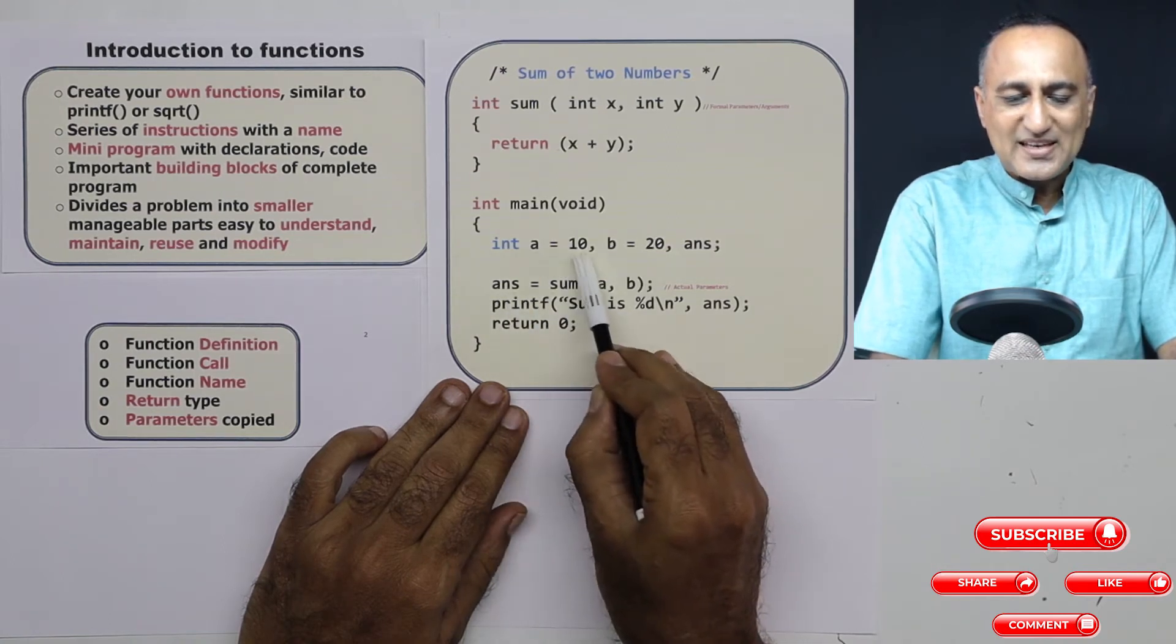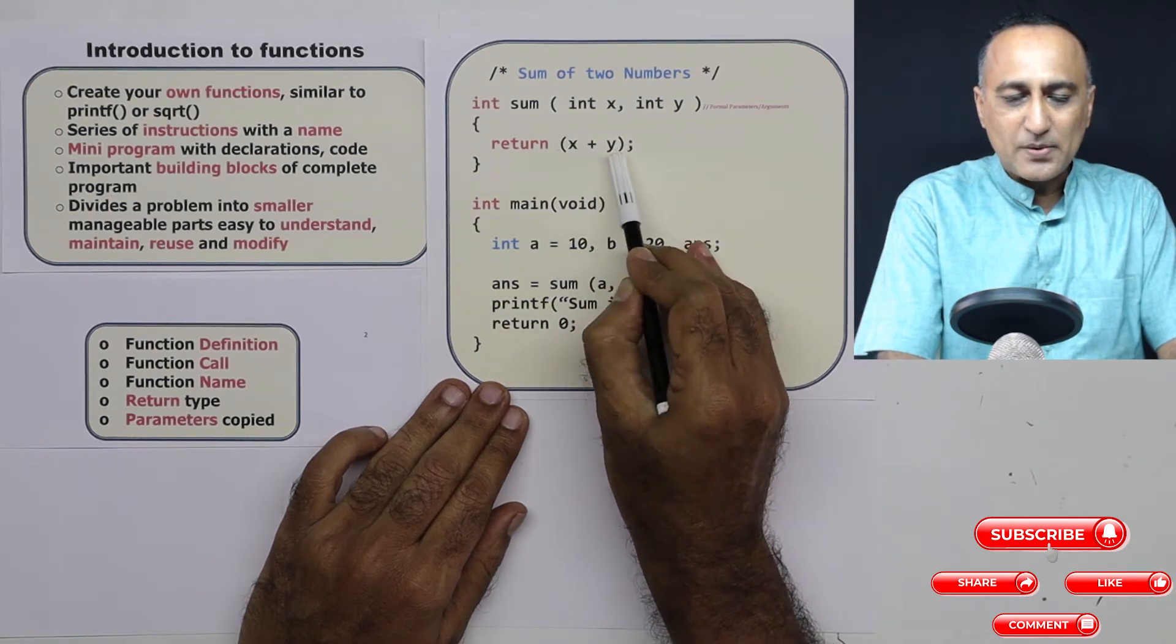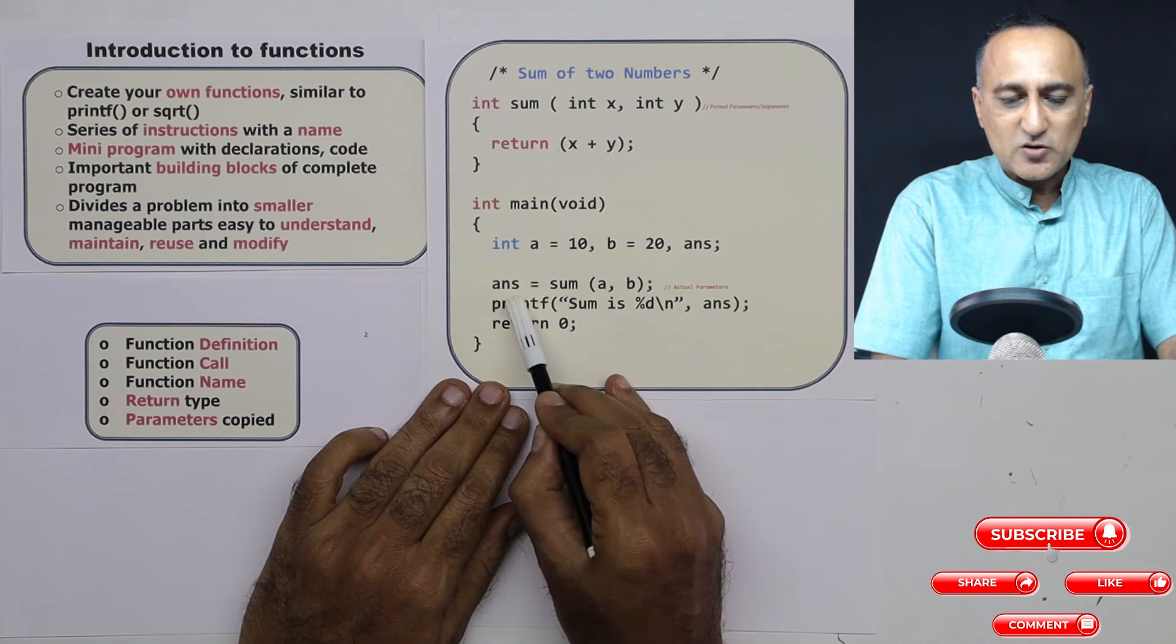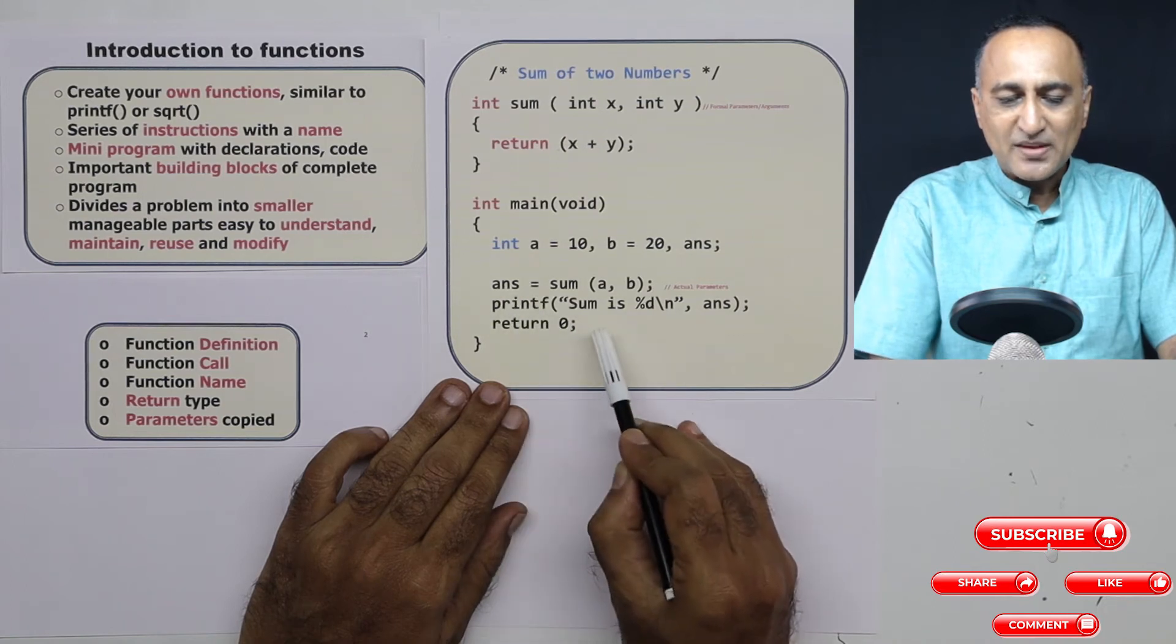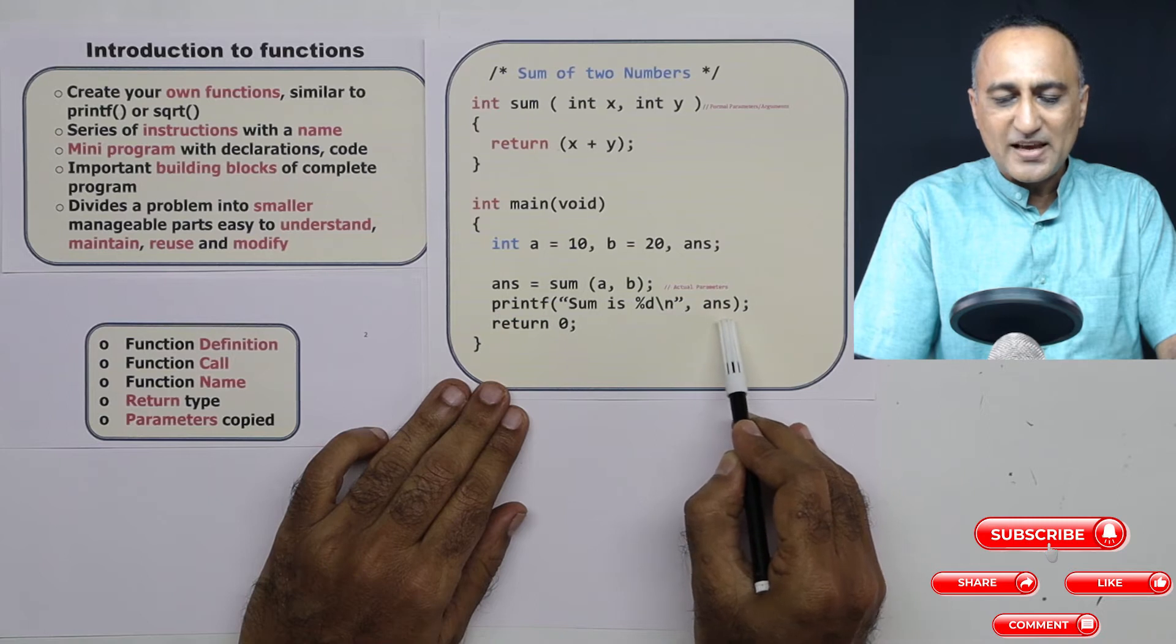Suppose a is 10 and b is 20, x would have been 10 and y would have been 20. 10 plus 20 would have been 30, so answer would have been 30, and the result of this printf would have been printed as 30.